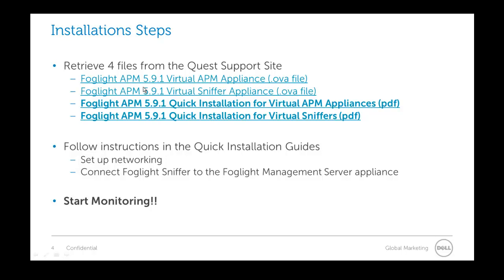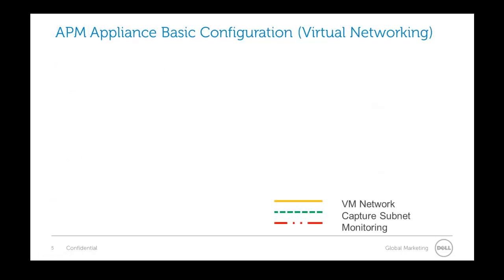After that, follow the instructions in the quick install guides, and that will take you through setting up networking. At the end, you'll set up the final networking step — connecting the Foglight sniffer to the Foglight management server appliance. Then that's it: you start monitoring. We're going to do a deep dive into the VM network, the capture subnet, and the monitoring section of those quick install guides.